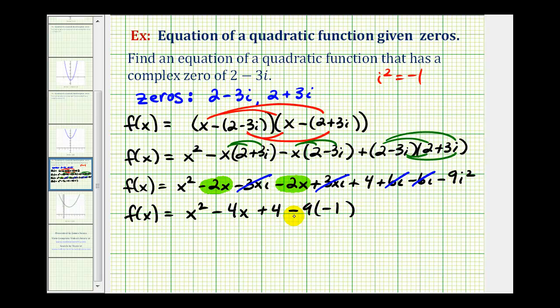One possible function with these zeros would be f(x) = x² - 4x + 13. And again, this is only one possible function that has the given zeros, because remember, if we wanted to, we could put a constant out here in the front, which would change the coefficients but not the zeros.